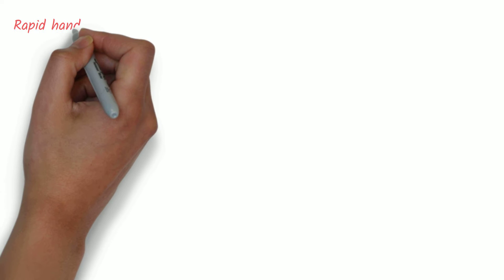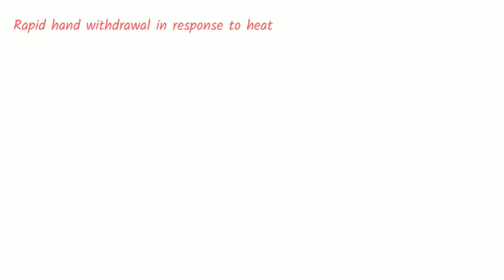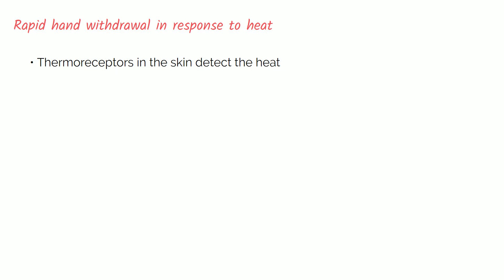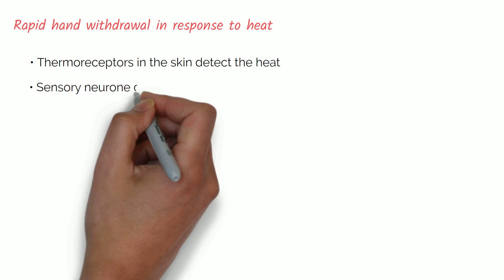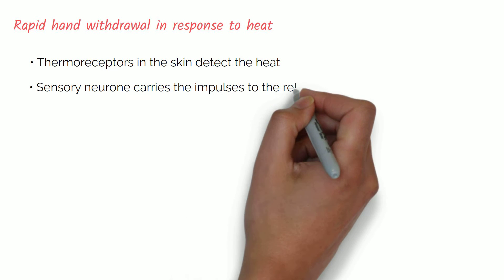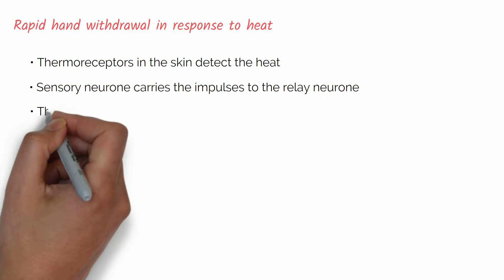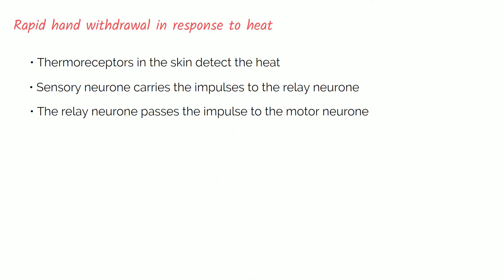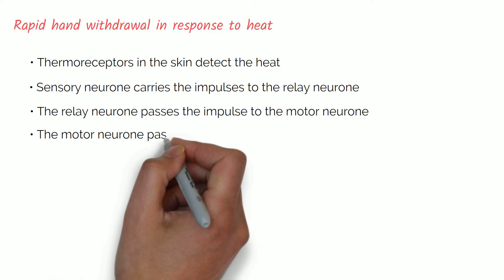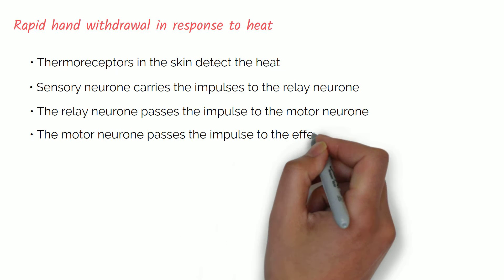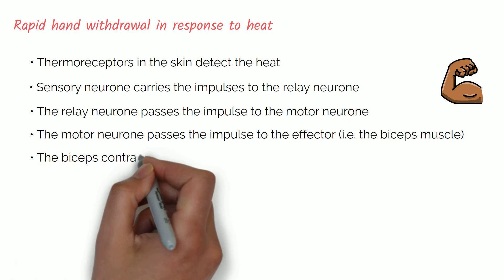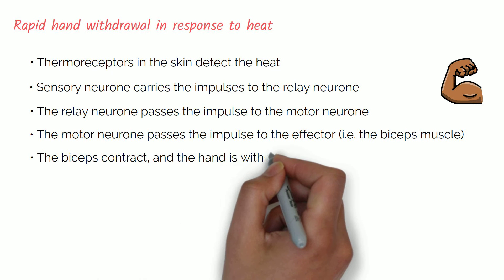For example, in rapid hand withdrawal in response to heat: first, thermoreceptors in the skin detect the heat; a sensory neuron carries the impulses to the relay neuron; the relay neuron passes the impulse to the motor neuron; and the motor neuron passes the impulse to the effector, such as the biceps muscle. The biceps contract and the hand is withdrawn away from danger.